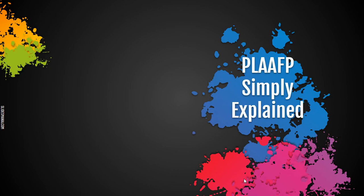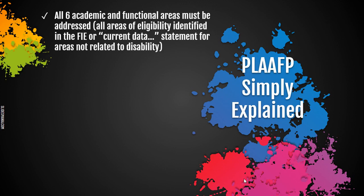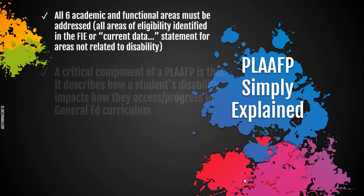Let's look at some basic compliance requirements for writing a quality PLAAFP. All six academic and functional areas must be addressed. You will provide information and data in all areas that are related to the student's disability, and you will use the 'current data indicates no need for specially designed instruction' statement in the areas that do not relate to the student's disability. Please use the district PLAAFP template, which has been updated, to ensure all areas are addressed and required information is included.